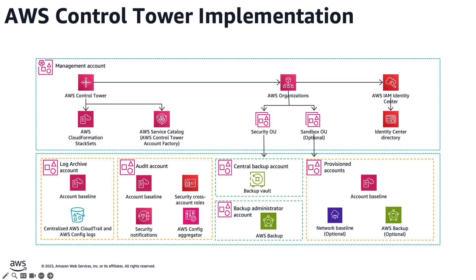This is the base architecture or foundation that AWS Control Tower provides to customers as they start building their multi-account environment. The log archive account and audit account names can be changed at the time of launch, as can the Security OU name. With AWS Control Tower, you can easily provision new AWS accounts using the AWS Account Factory. Account Factory creates new AWS accounts with a baseline security posture enabled by controls. AWS Control Tower automatically enables AWS CloudTrail and Config and enables centralized logging to an Amazon S3 bucket in a log archive account.